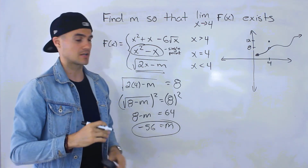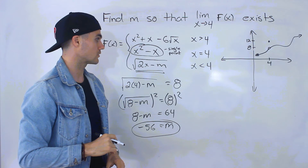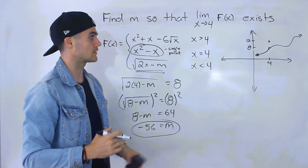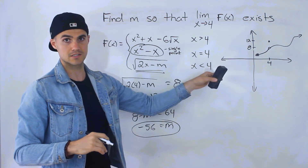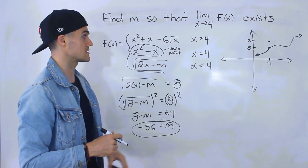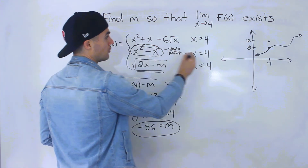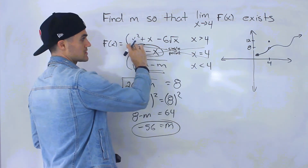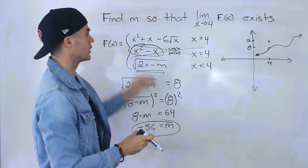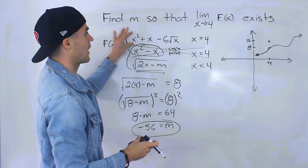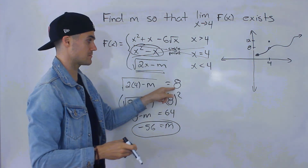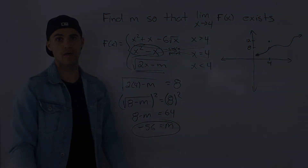Hopefully that explanation made sense. I wanted to break down a question where you have a discontinuous function where the limit can still exist, and you have to find a constant so the limit does exist. The middle point and middle piece were pretty much irrelevant — all we needed was the y value at x equals 4 for the first function, then find m so the third function has the same y value at x equals 4.